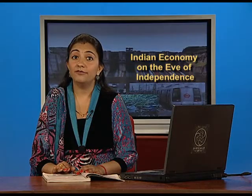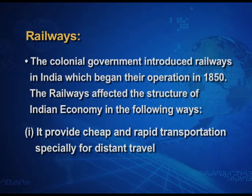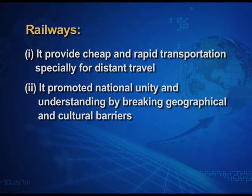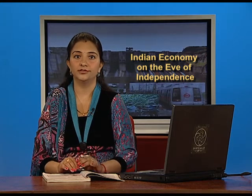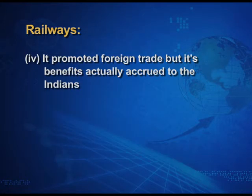The colonial government introduced railways in India, which began their operation in the year 1850. The railways affected the structure of the Indian economy in various ways. Firstly, it provided cheap and rapid transportation, specially for distant travel. Also, it promoted national unity and understanding by breaking geographical and cultural barriers, which was beneficial for Indians. Third, it encouraged commercialization of agriculture, which destroyed the self-sufficiency of the Indian village economies. Also, it promoted foreign trade, though its benefits did not actually accrue to the Indians.